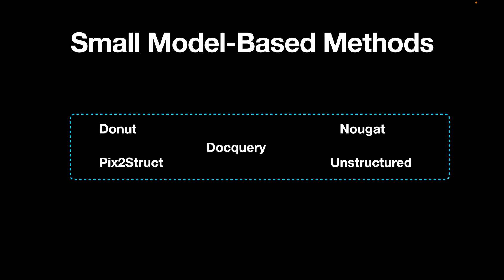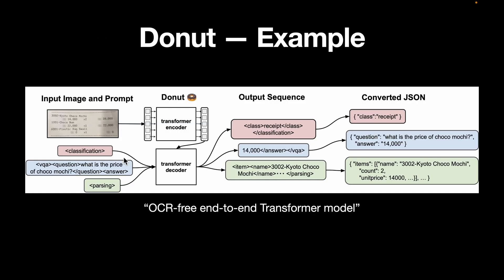Some small model-based methods are Donut, Nougat, and Pix2Struct. For example, Donut uses a transformer-based architecture: it takes the input image and prompt, uses a transformer encoder to directly encode that image, feeds it to a transformer decoder which decodes the text and gives an output sequence. This output sequence can then be directly converted into structured output such as JSON. The main advantage is that it is OCR-free and is an end-to-end transformer model.